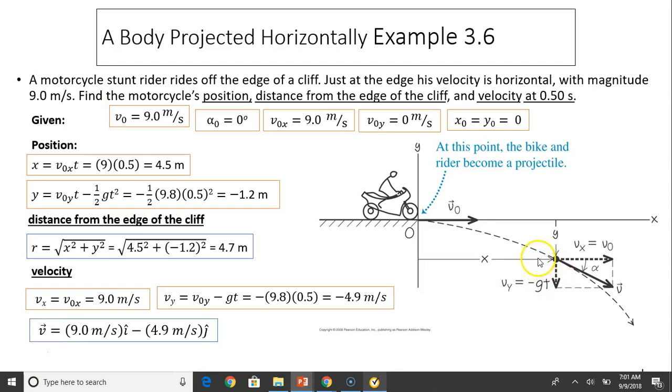The velocity is a vector. We can use vector notation or unit vector notation. It's Vx i plus Vy j. Vy is negative 4.9 and Vx is 9.